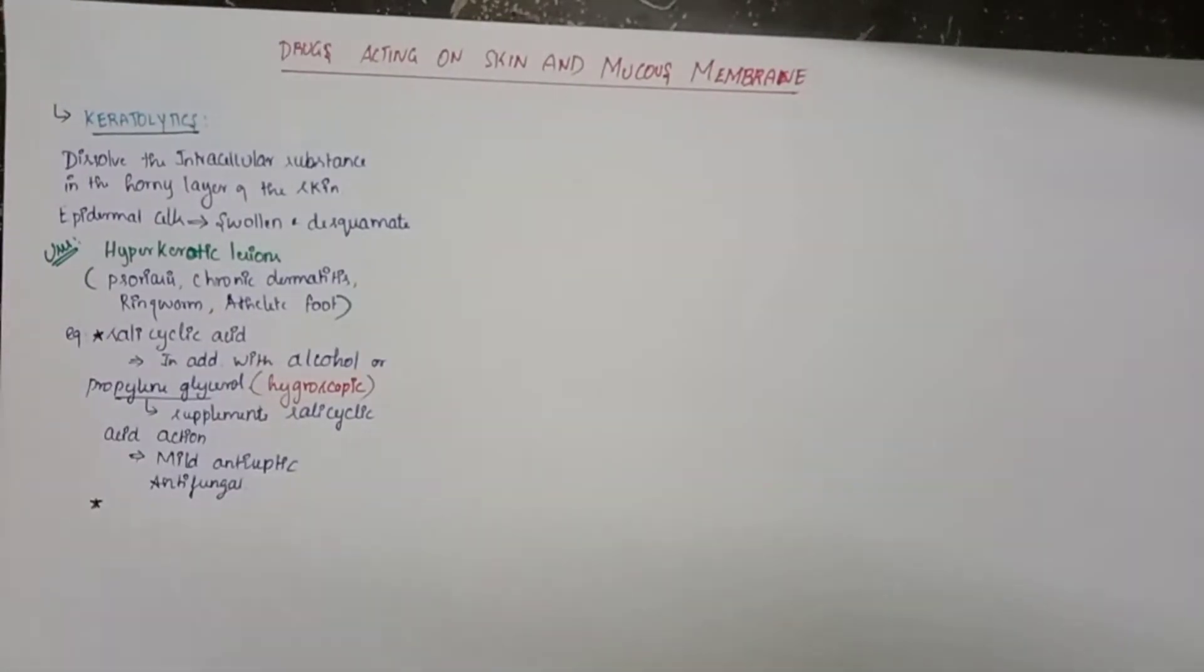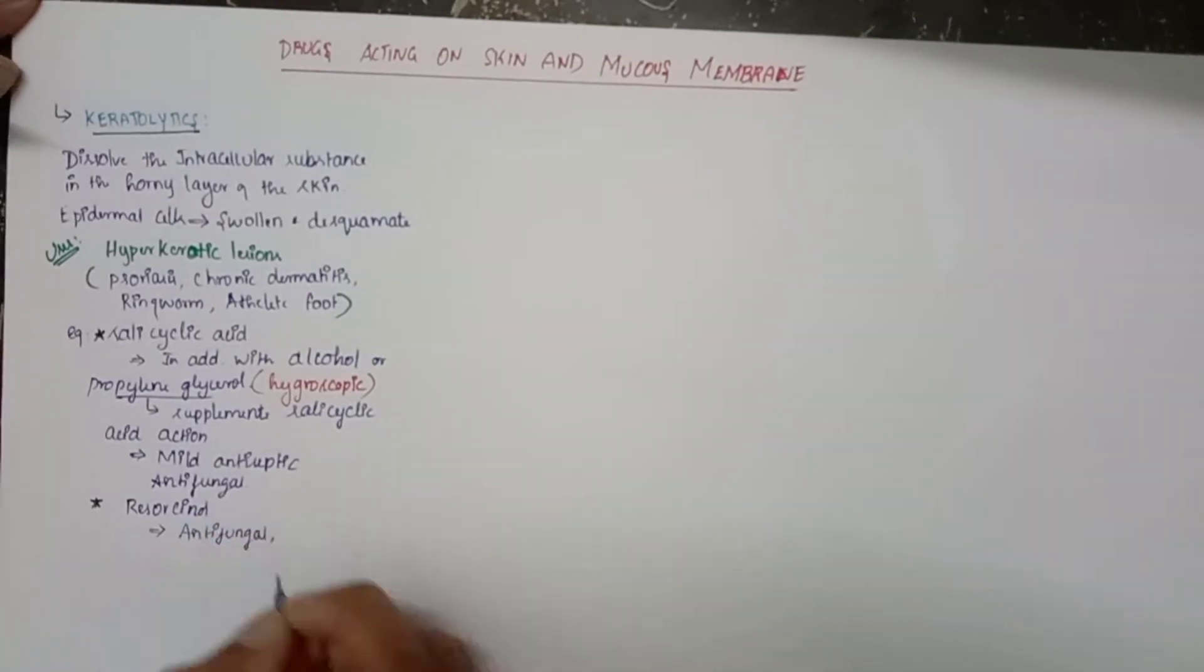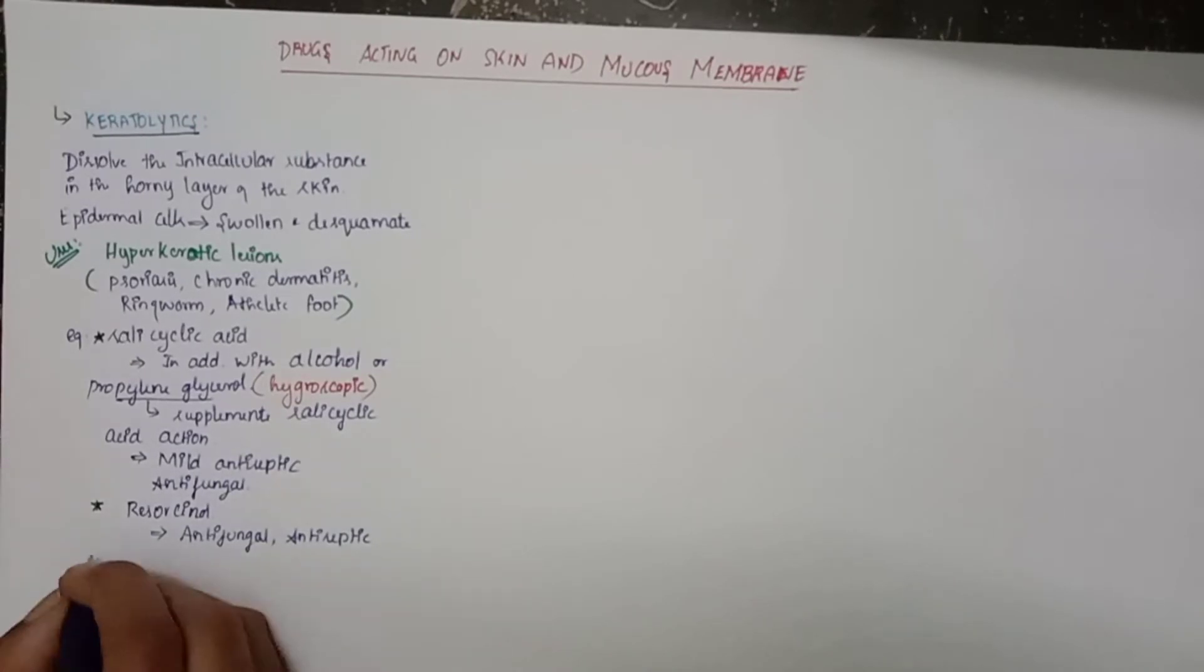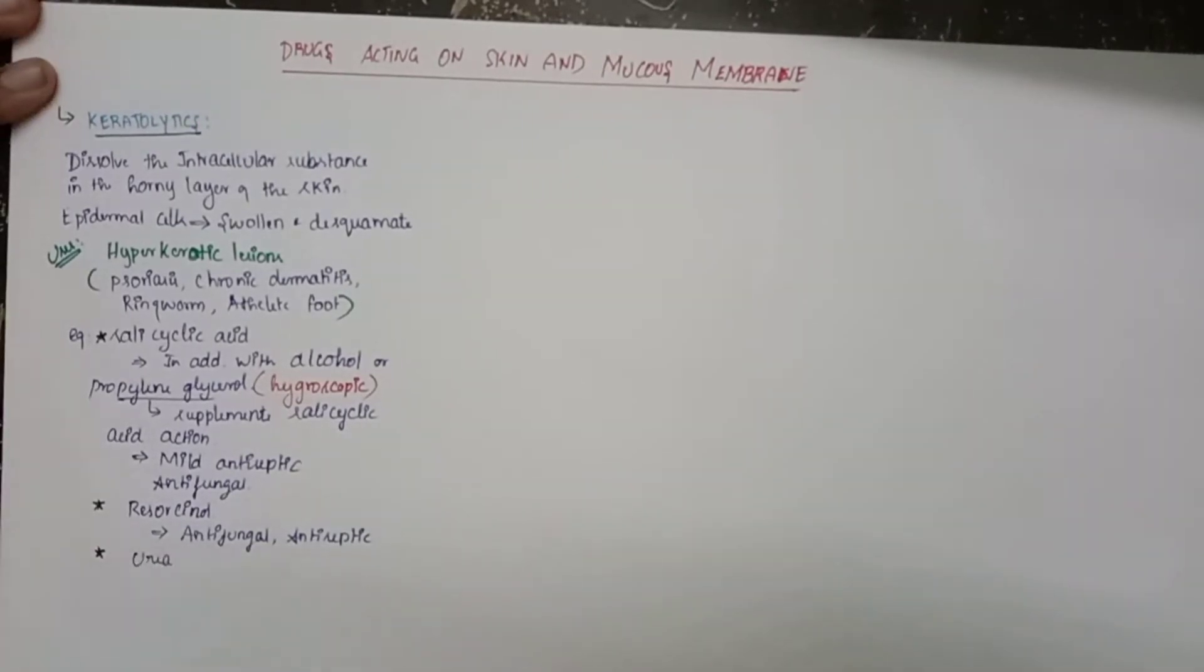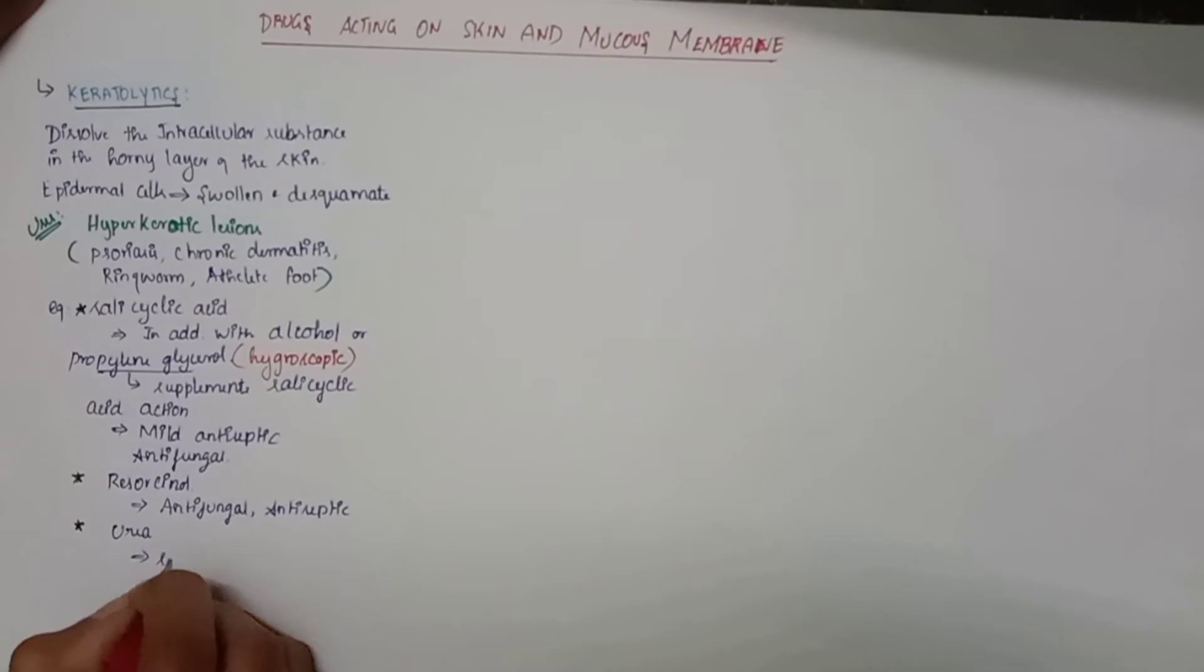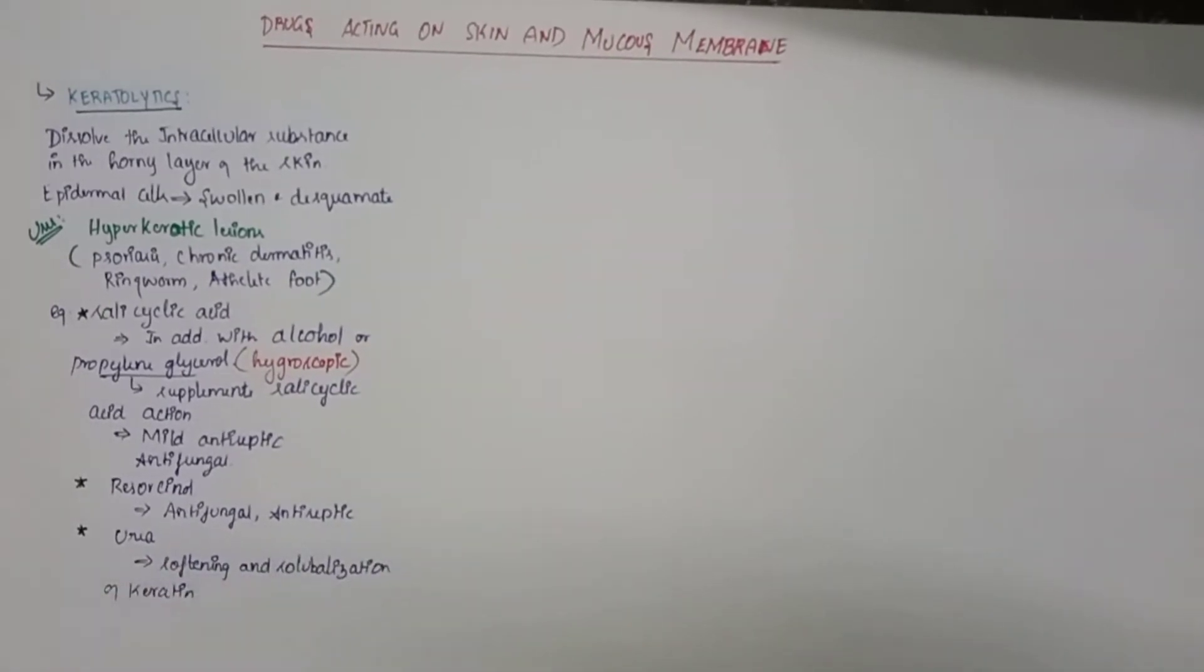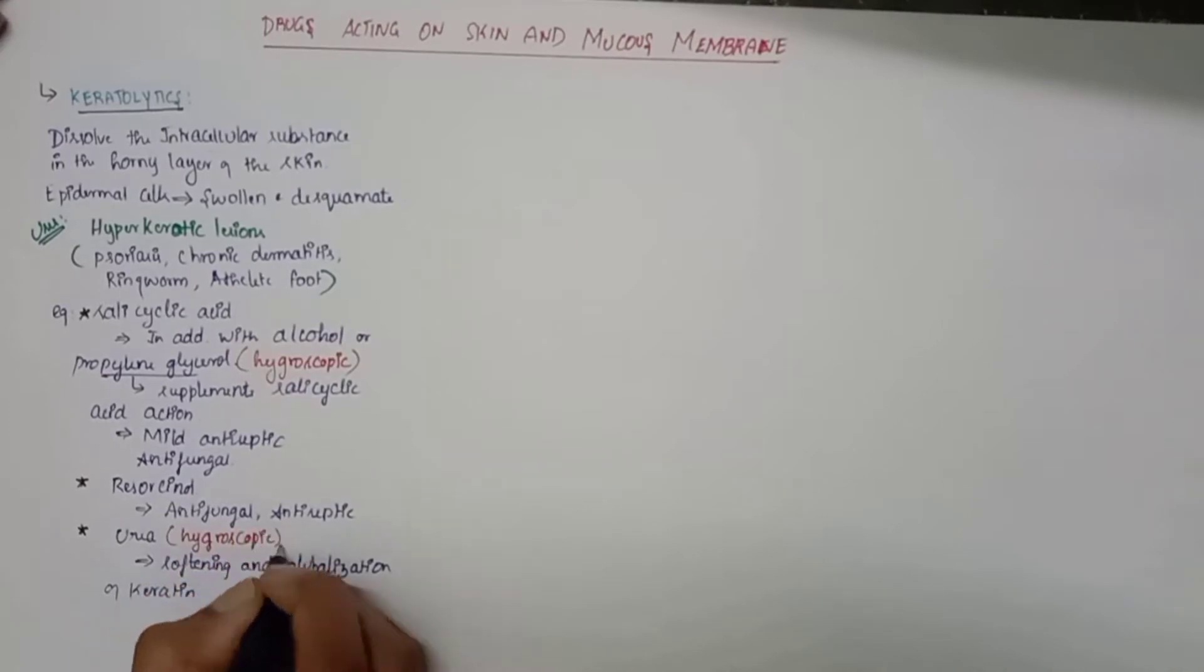It acts as a mild antiseptic and antifungal also. The other drug is resocynol, which is an antifungal and antiseptic. The next drug is urea, which also has softening and solvization property and acts as a hygroscopic.